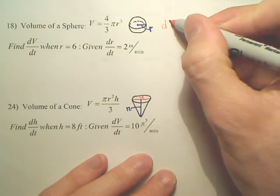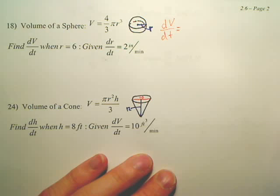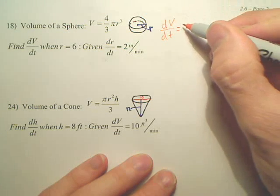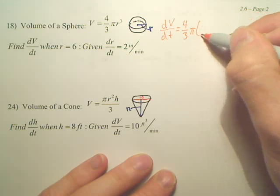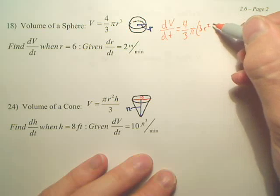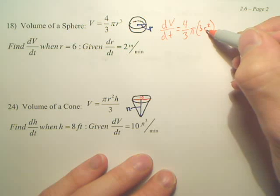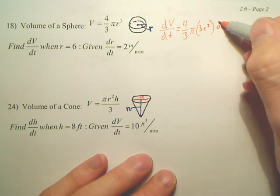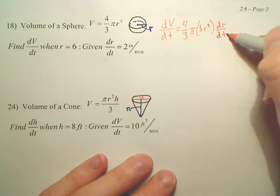So that is going to be dV/dt equals 4 over 3 pi. Take that out. And this is going to be 3r squared. And then what's the derivative of r? It's a chain rule. The derivative of r, chain rule-wise, is dr/dt.